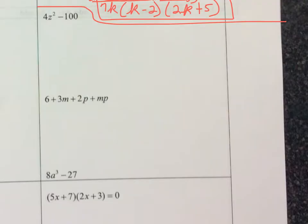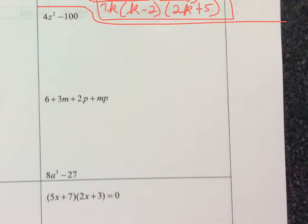Moving on, let's tackle 4z squared minus 100. We ask if there's a common factor. Take the smallest number, 4, and check its factors: 1, 2, and 4. Does 4 go into 100? Yes, 25 times. So let's factor out a 4. Four out of 4z squared leaves z squared, and 4 out of 100 leaves 25.